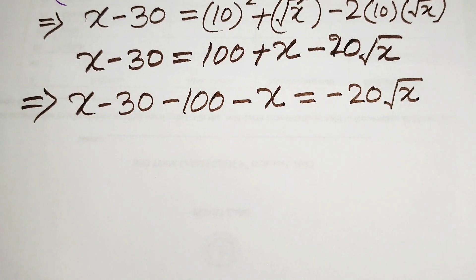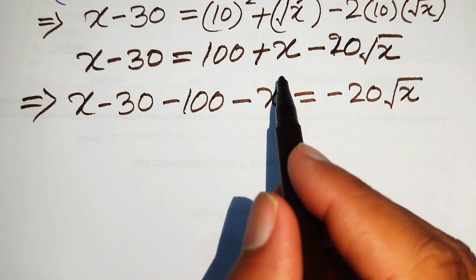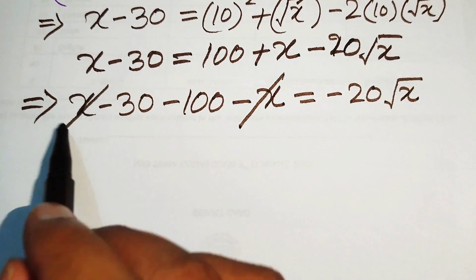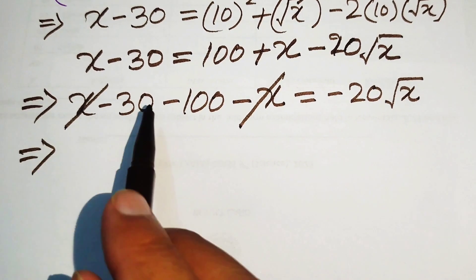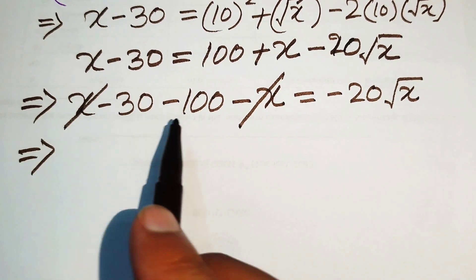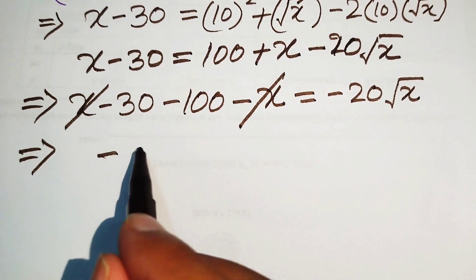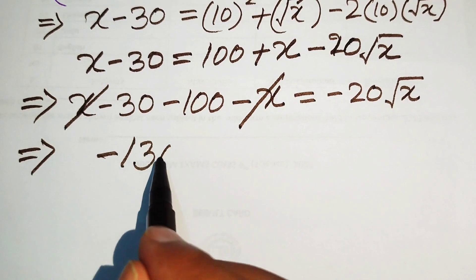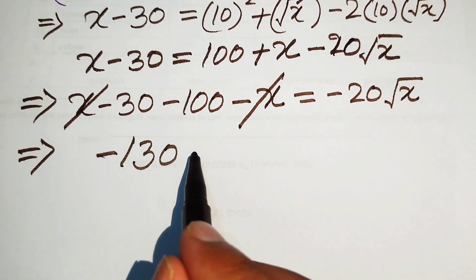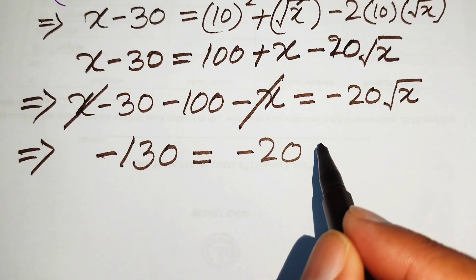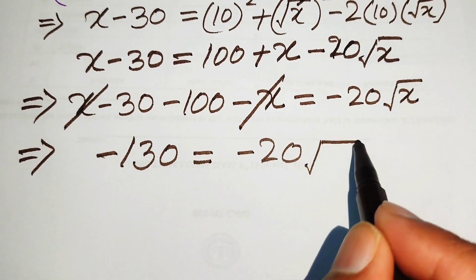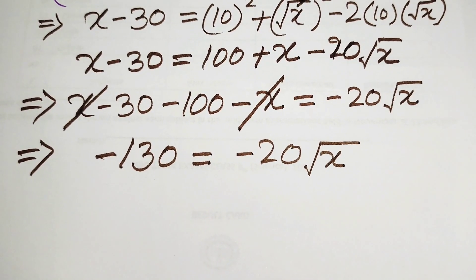We simplify the left hand side by combining like terms. The negative x and positive x cancel each other, and minus 30 minus 100 equals minus 130. So we have: minus 130 equals minus 20 times square root of x.